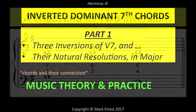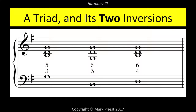Any of the three tones of a triad can be positioned as the bass note. The three positions of a triad, therefore, are the root position, first inversion, and second inversion. The bass figuring is shown: V3, meaning root position; VI3, first inversion; and VI4, second inversion.